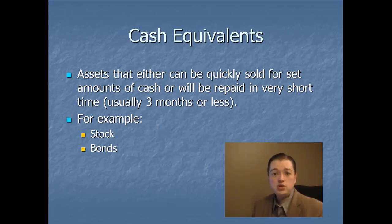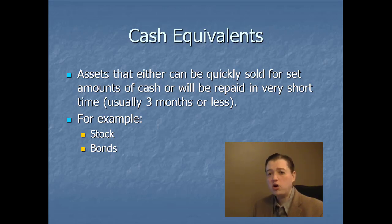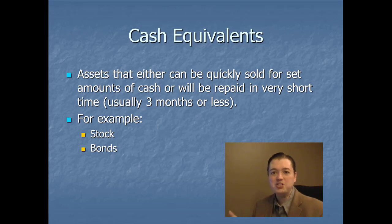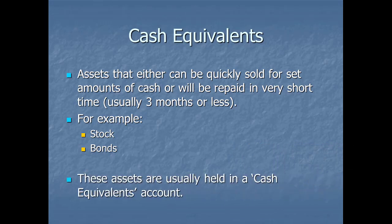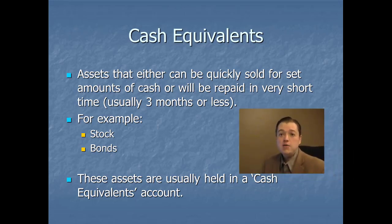Treasury bills and treasury bonds from the U.S. government always have a market for them — they can be easily redeemed or sold to somebody else. Big company stock like Microsoft, Apple, or Walmart are always being traded; one quick phone call to a broker and you turn it into cash. Stock in companies like Berkshire Hathaway, where the stock sells for $10,000 to $20,000 a share, wouldn't be included because you really can't turn that into cash very quickly. So those kinds of accounts are put in a special cash equivalents account. For most companies they're treated just like cash, and they'll also be referred to as trading securities.